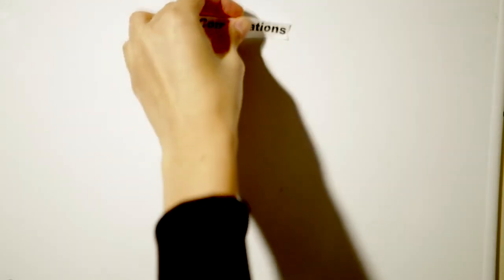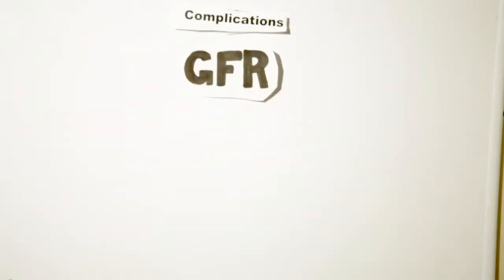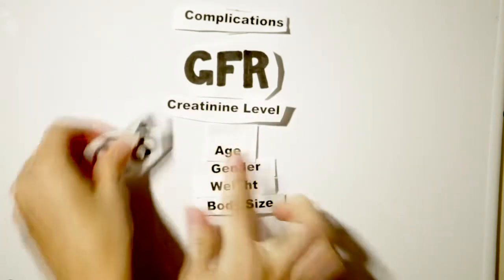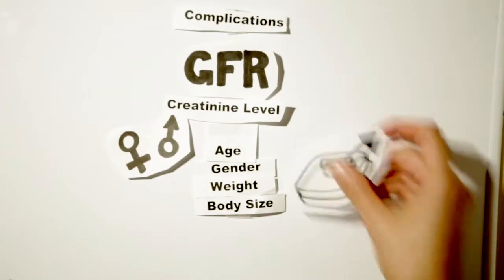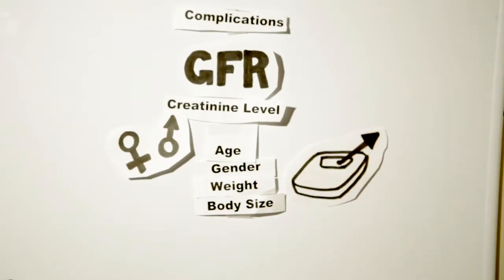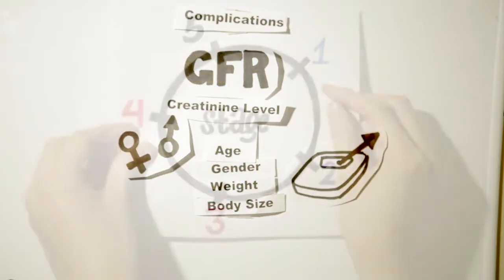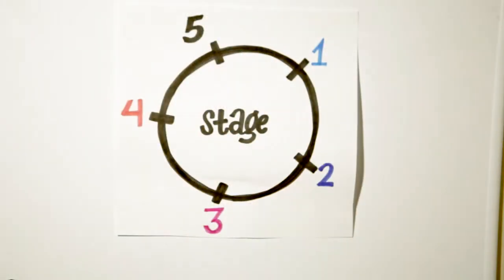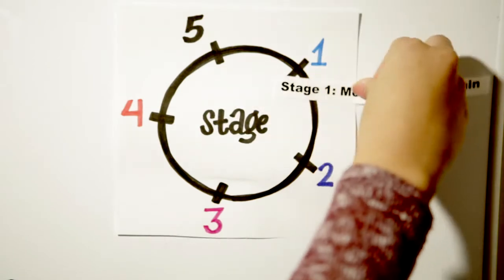Kidney damage is measured through glomerular filtration rate, also known as GFR, which is calculated by a doctor considering factors such as blood creatinine test results, age, gender, weight, and body size. Based on the degree of the damage, there are five stages of chronic renal failure.